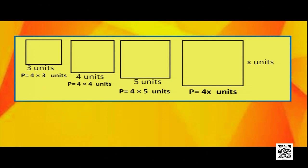Here comes the algebraic expression. When we consider 4x, it has two parts. One is 4, that is a constant, and another part is x, that is a variable. Why is it variable? In each square, 4 is a constant, and what is changing is the length of the side. That means the length of the side is our variable, which is taken here as x.